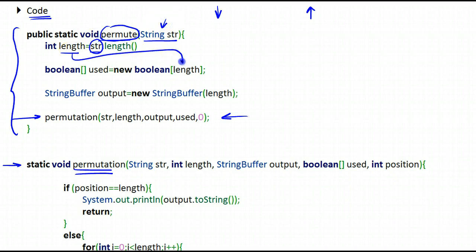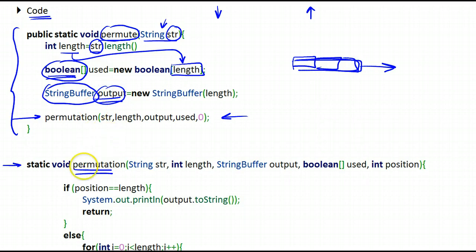And it uses the length to create an array of Boolean values. So basically, each Boolean value within that array will correspond to one of the characters in the string, and this will allow us to know whether a character has been used or not in our string buffer. And the next thing is the string buffer called output. This will contain the output. Once we fill it out, we will print it out. This will be one permutation. So this will contain the characters that we will be printing out as our permutation.